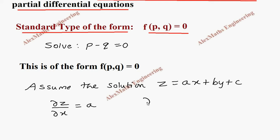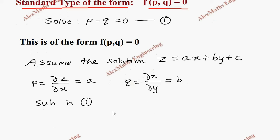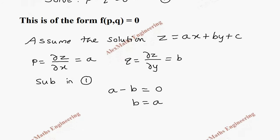Differentiating z partially with respect to x gives p = a, because other terms are 0. And differentiating z partially with respect to y gives q = b. Now substituting p as a and q as b into equation 1, which is p minus q equal to 0, it becomes a minus b equal to 0, so b equals a.